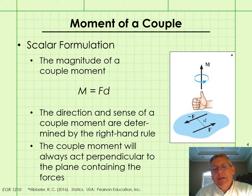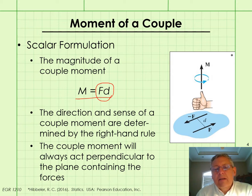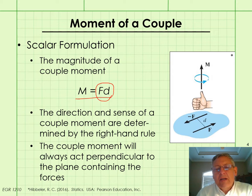The scalar formulation of a couple moment M is given by this equation, which should look familiar. It's just the magnitude of one of the forces times the perpendicular distance between the two forces in the couple, and the direction and sense of the resulting couple moment are determined by the right-hand rule.